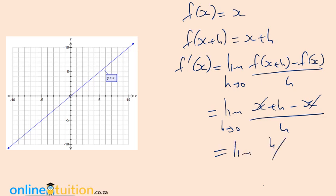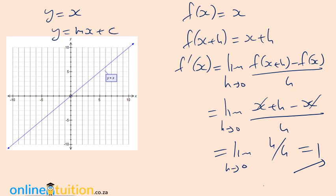We have the limit of h over h as h tends to zero, which is 1. So the derivative of f(x) = x is 1. Think about that carefully — from school, y = mx + c. Since it passes through the origin, the y-intercept is zero. The number in front of x is the slope m, and that number is 1. There's your 1. Get the point?